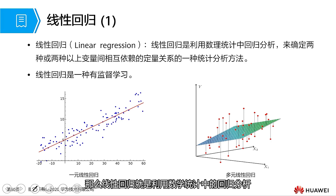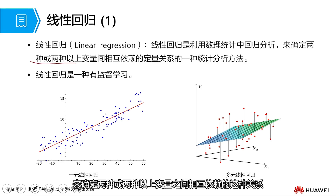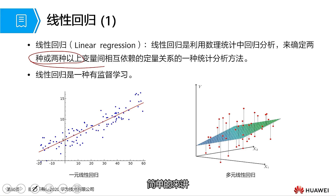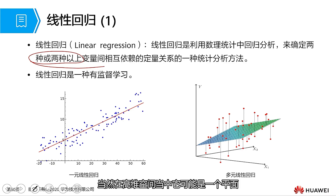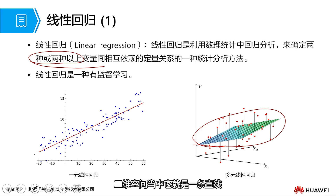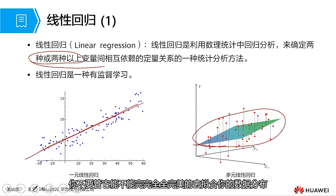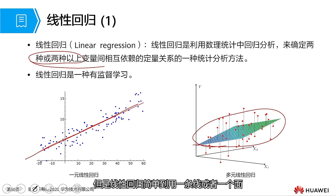I believe in every course that teaches machine learning, it will start with linear regression, because it is the most fundamental, the simplest, the most practical and commonly used machine learning algorithm. Linear regression uses regression analysis and mathematical statistics to determine the relationship of interdependence between two or more variables. Simply put, it defines a straight line — of course in high-dimensional space it may be a flat surface, but in two-dimensional space it is just a straight line — to fit the existing data distribution.